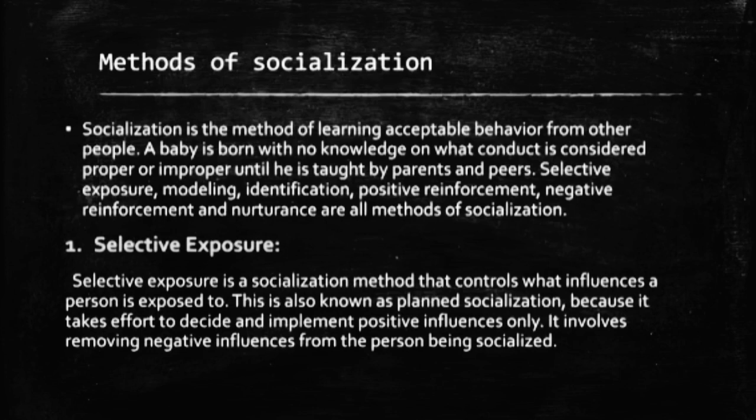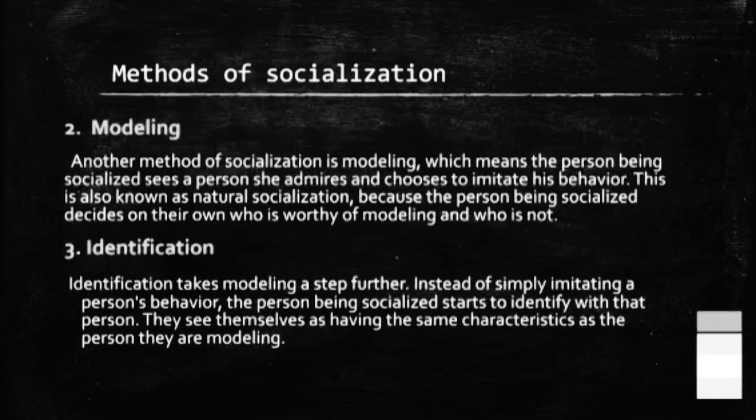There are six types of methods of socialization, so let's learn each one by one. Sabse pehle hai hamare paas selective exposure. Jaise ke naam se pata chal raha hai, ismein aap select karte ho kisi bhi individual ki socialization ko. Isko planned socialization bhi kehte hain, kyunki aap individual ko sirf positive influences se interact karvana chahte ho aur kisi bhi buri aadat se bachana chahte ho ya isko bilkul remove karna chahte ho ek individual se.